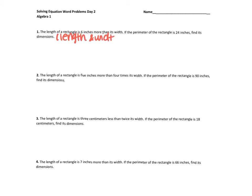So that's what we're looking for — what those dimensions truly are. I would start, until you get really comfortable with these, by drawing a rectangle and labeling what we know. It says the length of a rectangle is six inches more than its width — that's the key information. So we could say we want our width to equal X.